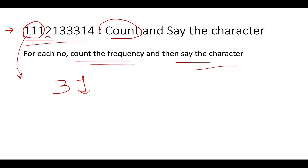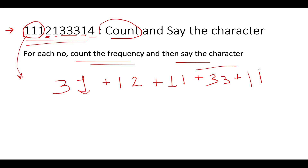Next we have two twos with a frequency of one, so we add 'one two'. Then we have one, with frequency one, so we add 'one one'. Next, three occurs three times, so the frequency is three and the character is three: 'three three'. Then one occurs once: 'one one'. Then four occurs once: 'one four'. The updated string becomes '3 1 1 1 2 1 1 3 3 1 1 1 1 4' — this is the next number in the count and say sequence.